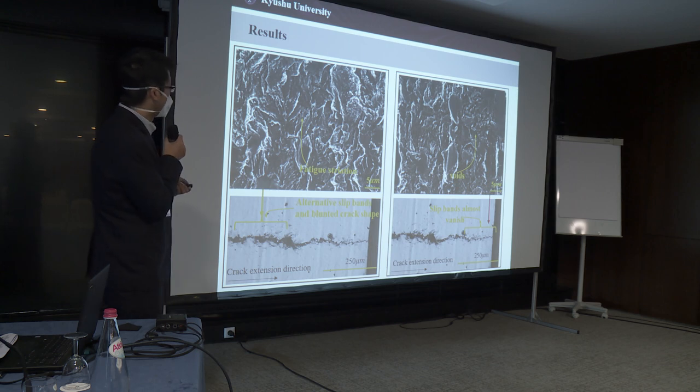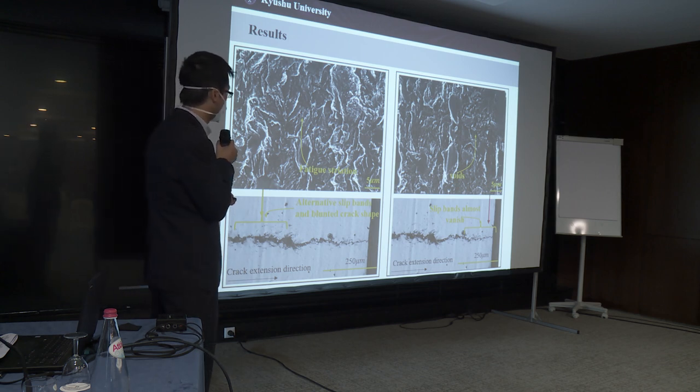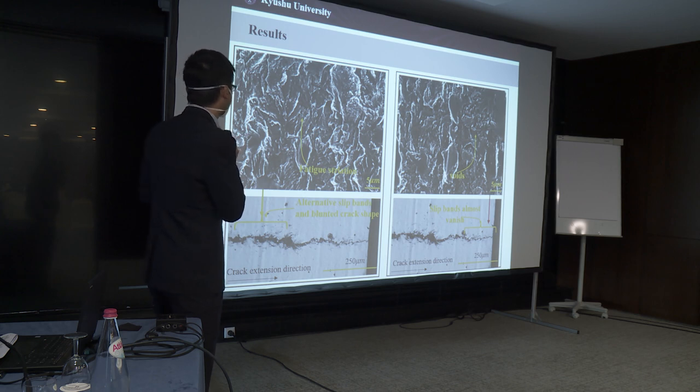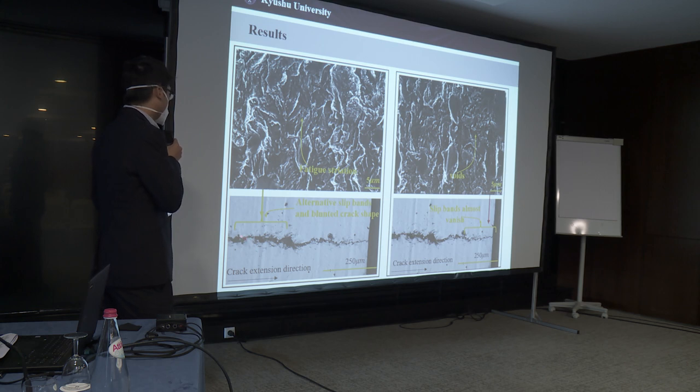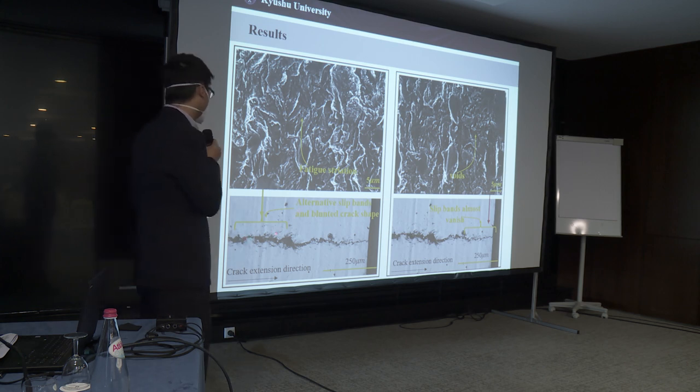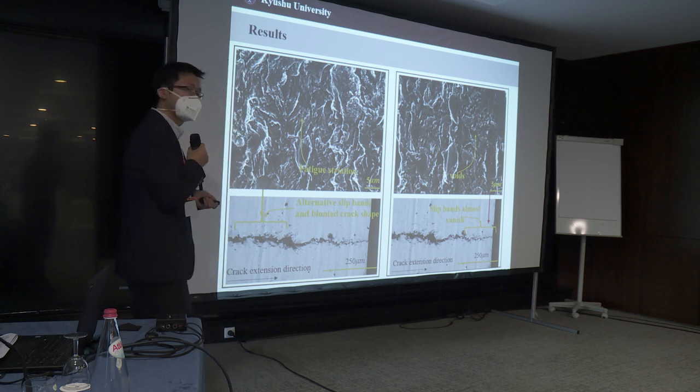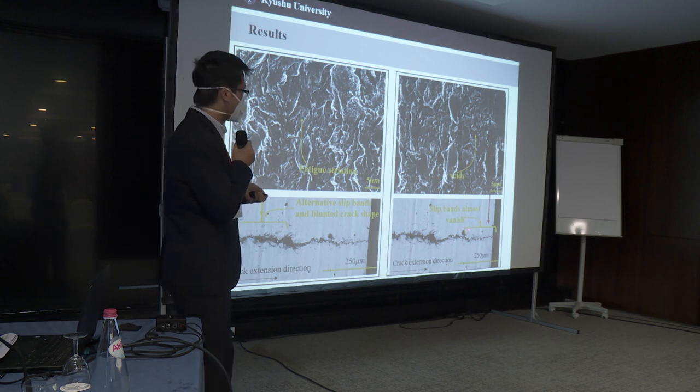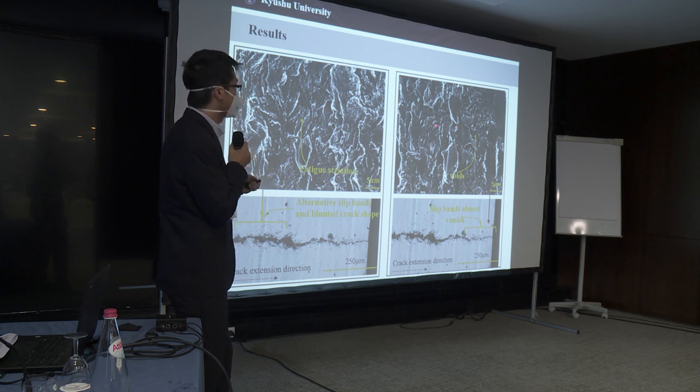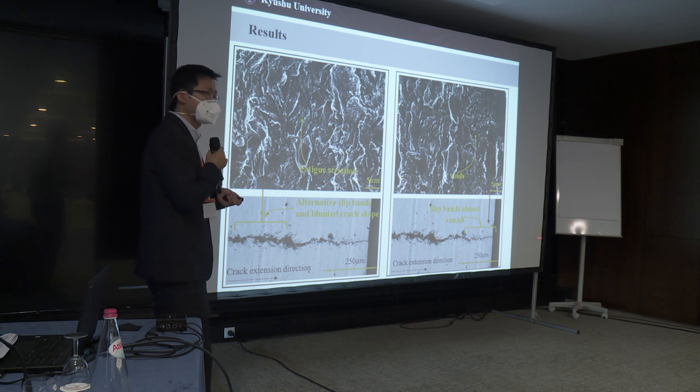Of course, I compared the fracture surface at these two stages. And at this first stage, fatigue striation is dominated in the fracture surface, and all the alternative slip bands and the blunted crack shape is the major of this stage. But while the crack repropagated abruptly at this stage, the micro voids is the dominating fracture surface, and you can see that the slip band is almost vanished.